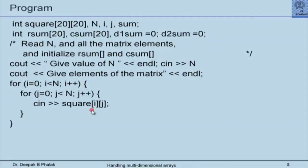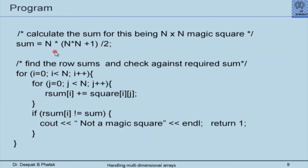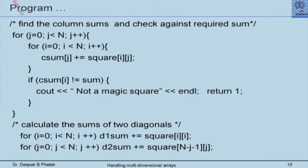An iteration reads all elements of the array. I calculate the required sum as n×(n×(n+1)/2), then find row sums and check against this required sum. If the i-th row sum is not equal to the required sum, the matrix is not a magic square. The same is done for column sums. I then calculate the sums of both diagonals — with n elements each — using square[i][i] for the main diagonal and square[n−j−1][j] for the other. If either diagonal sum is incorrect, it is not a magic square.